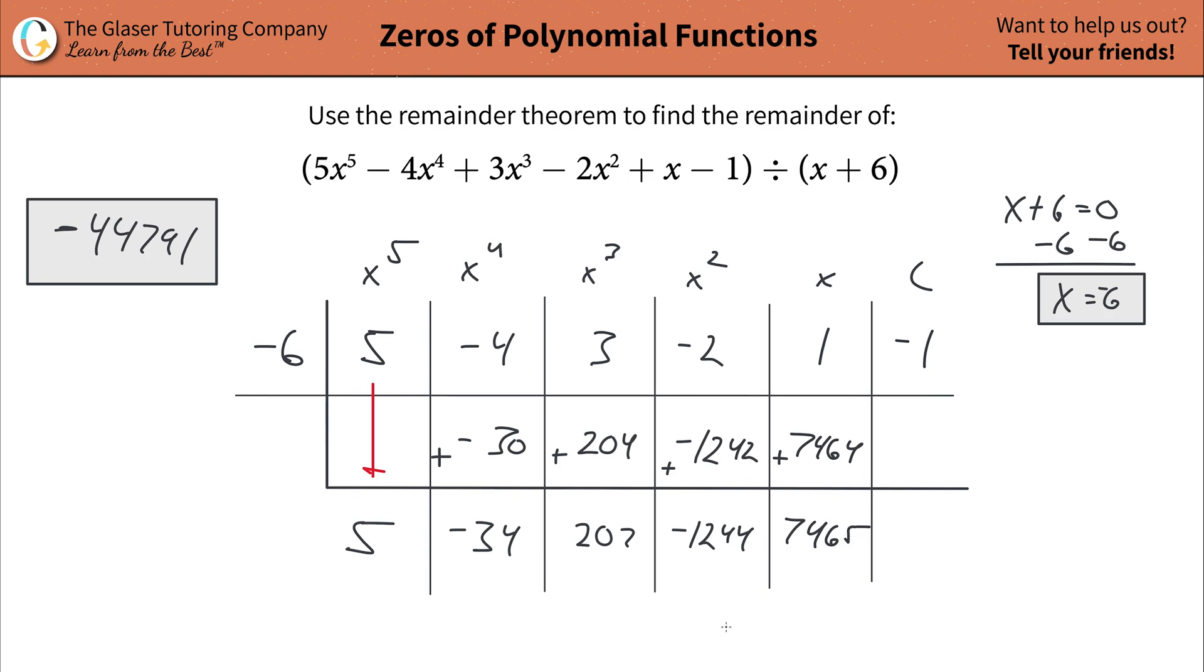Then take the 7465, multiply it by the negative 6. So that should be now a negative 44,790. So minus one on the top, and that's negative 44,791.